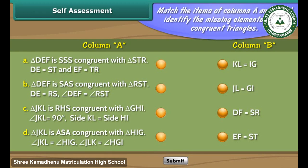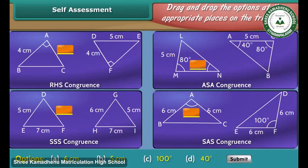Self-assessment: match the items of columns A and B and identify the missing elements in the congruent triangles. Drag and drop the options at the appropriate places on the triangles.